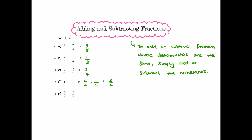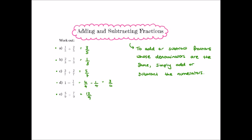Finally, part e: five ninths plus seven ninths. Five plus seven is twelve, so we get twelve ninths. Twelve ninths is a top-heavy or improper fraction, so we split it into a mixed number. How many nines make twelve? It's one with a remainder of three, so twelve ninths equals one and three ninths. But three ninths simplifies to one third by dividing both by three, so the answer is one and one third.